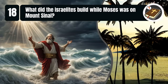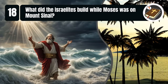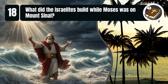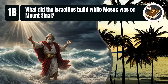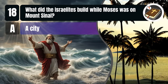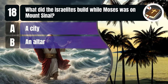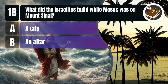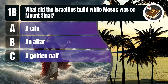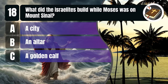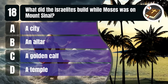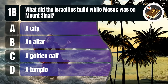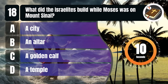Question 18. What did the Israelites build while Moses was on Mount Sinai? A. A city, B. An altar, C. A golden calf, D. A temple. You get 10 seconds.